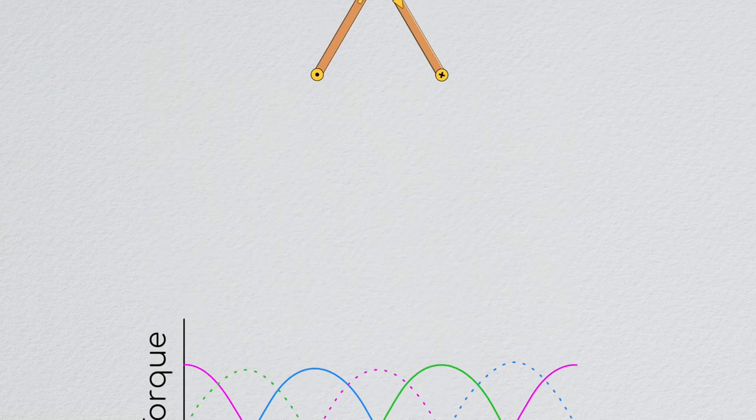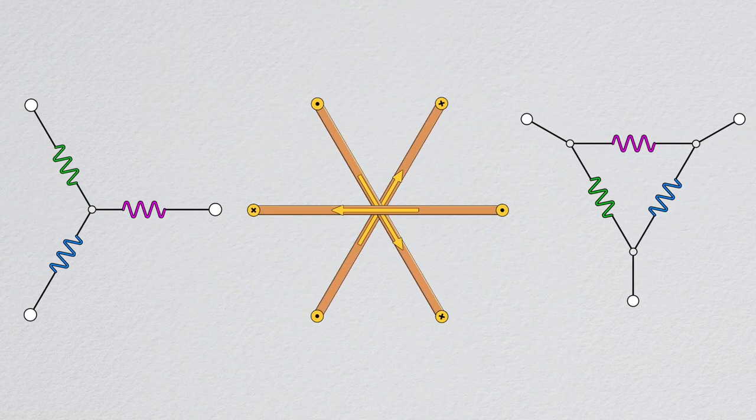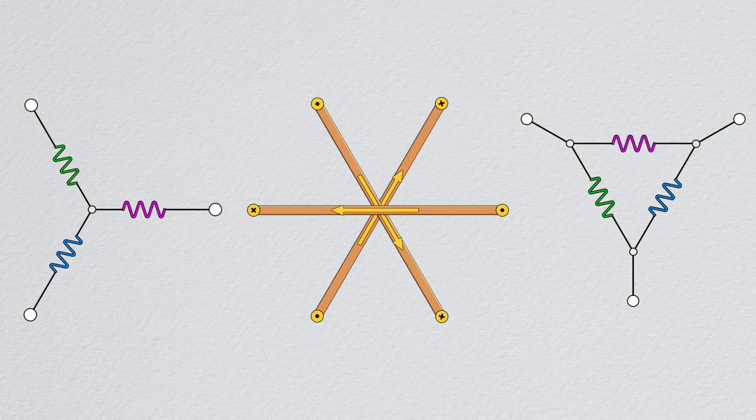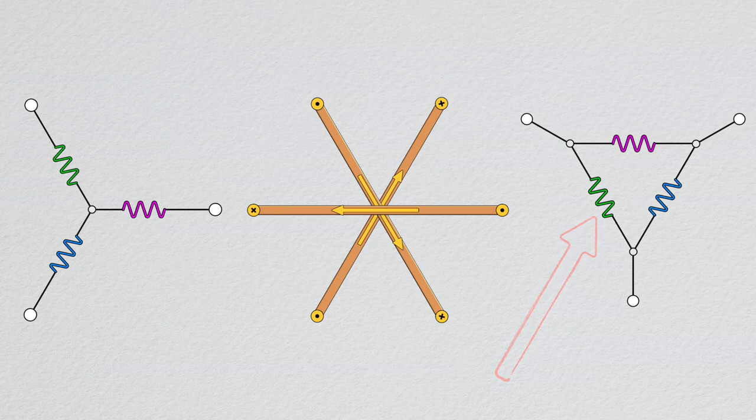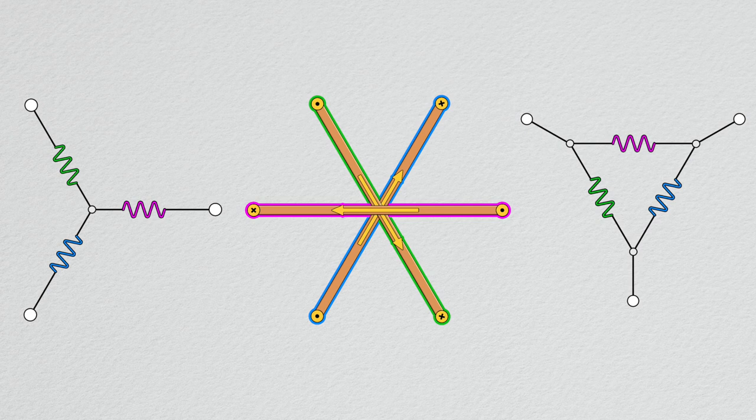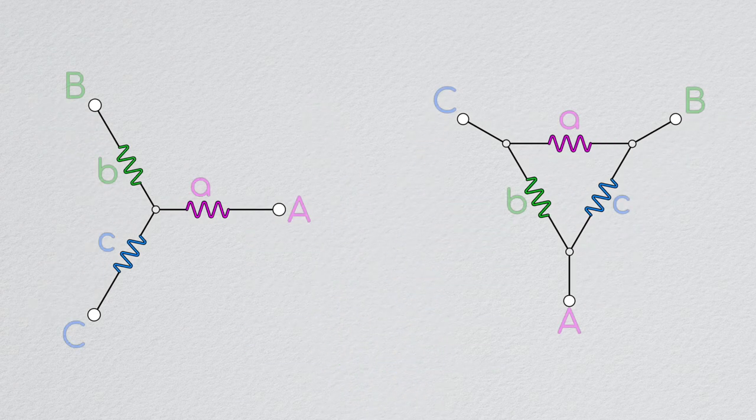But how do we electrically connect these loops to make this possible? Well, there are two ways: a Y configuration and a Delta configuration. In each of these diagrams, the resistor squiggle denotes a loop of wire which would be aligned with the squiggle. It's worth noting here that the diagram doesn't necessarily match the geometric layout of the coils, but it's an equivalent electrical circuit.